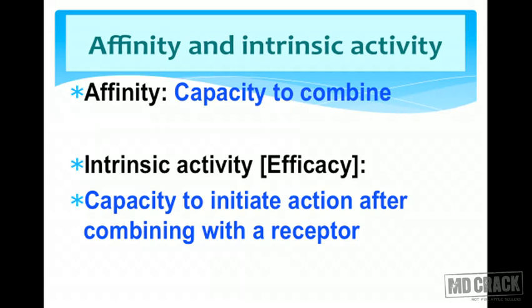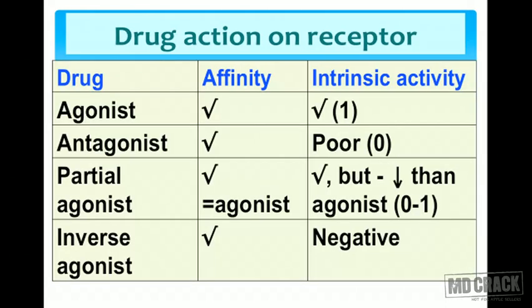Since we are talking about receptors, we need to know two important terms: affinity and intrinsic activity. Affinity is the capacity of a drug to combine with a receptor, whereas intrinsic activity (also called efficacy) is the capacity of a drug to initiate action after combining with a receptor.